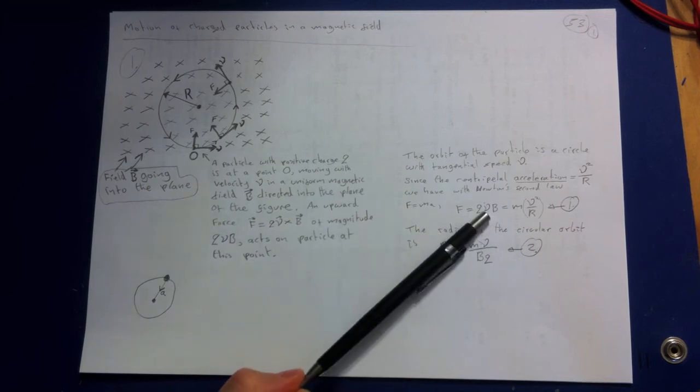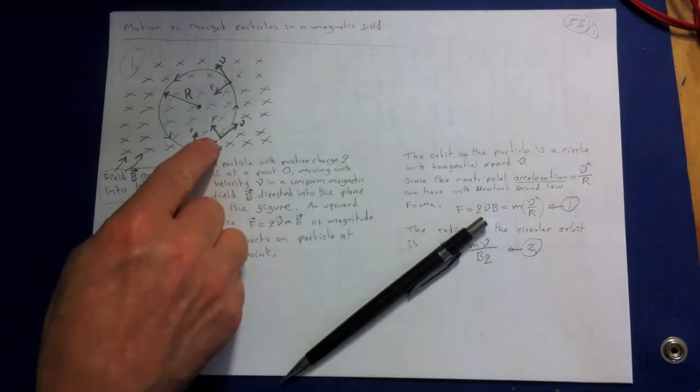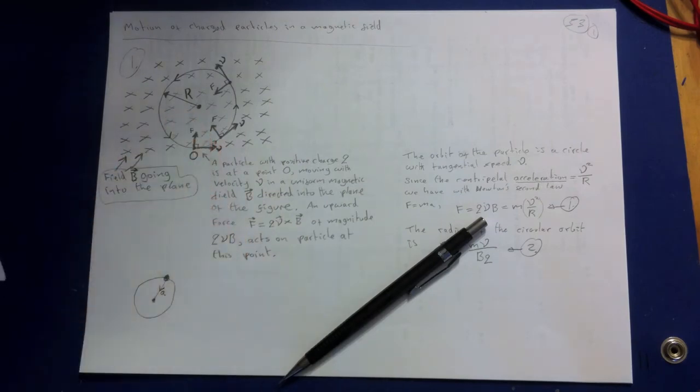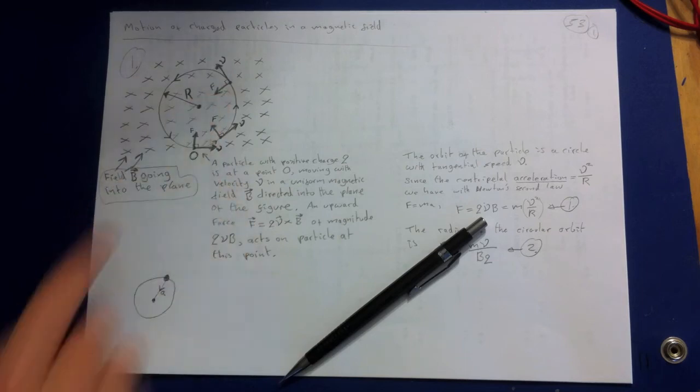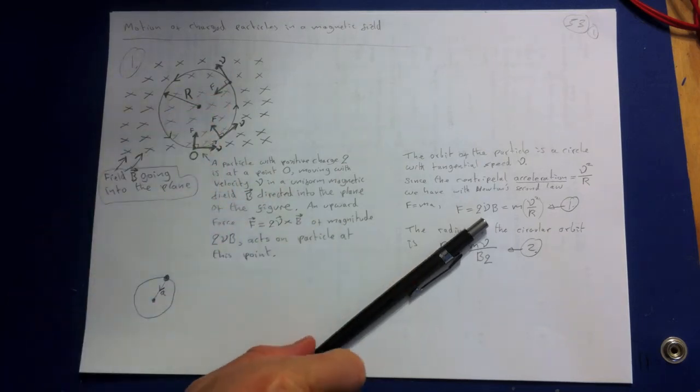we can equate QVB to MV squared over R. We've got to equate the force, the force on the particle QVB. We can equate it also because the force is going inwards. We can equate that to the centripetal force because they're basically the same thing. So we can set them to be equal.